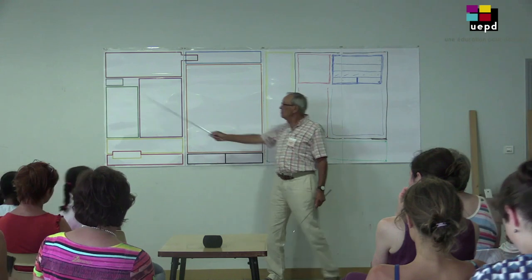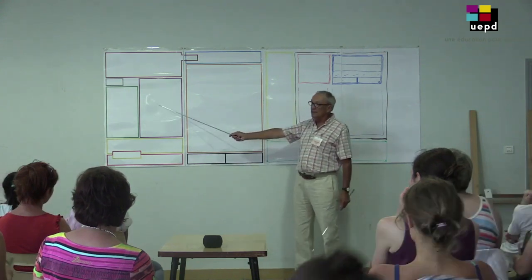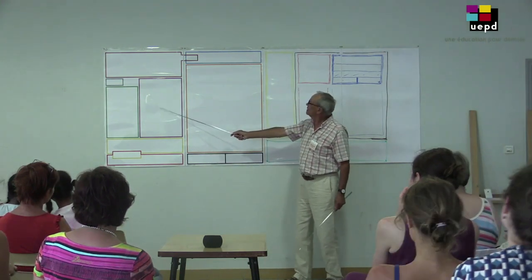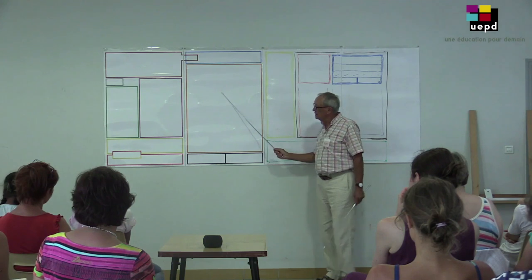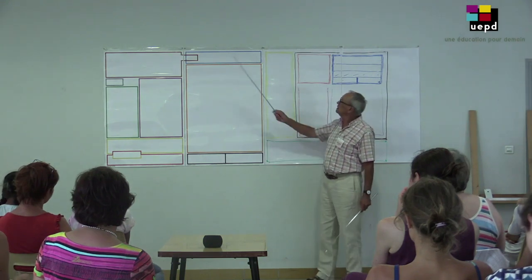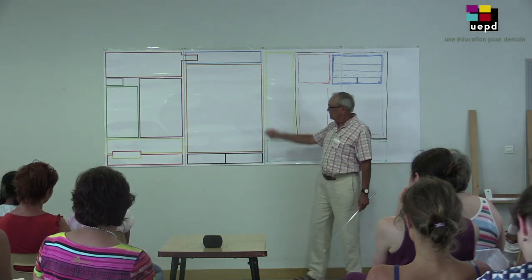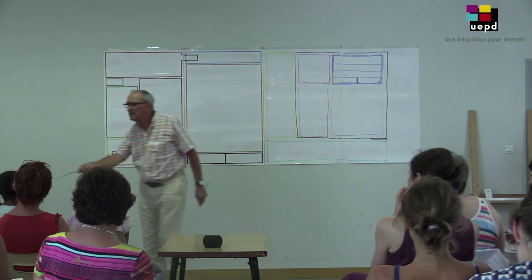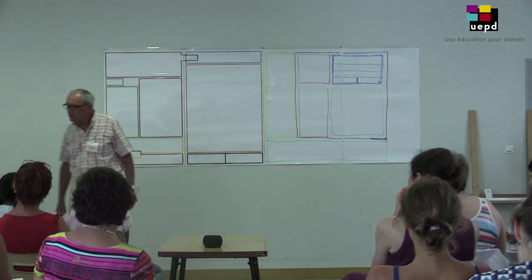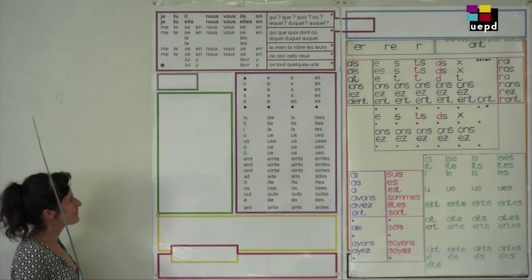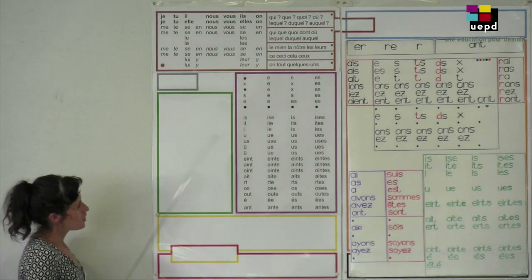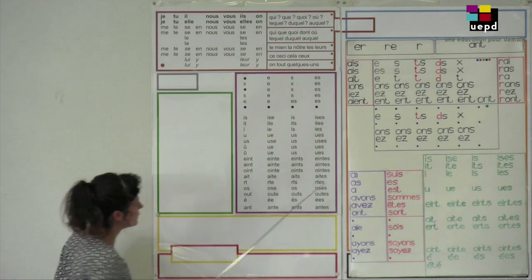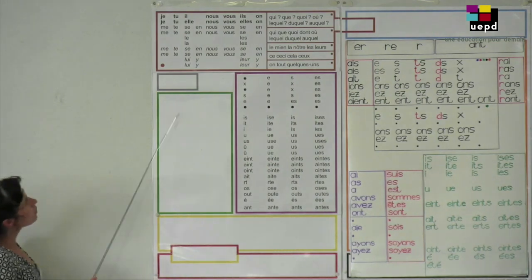De quoi s'agit-il ? Les verbes. Les amours. Et les précautions. Jean a réparti les bonbons.